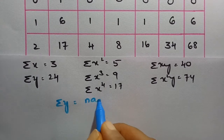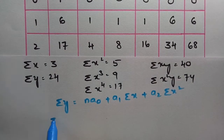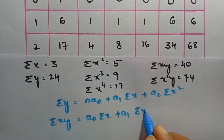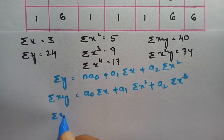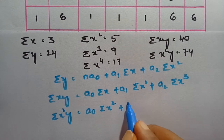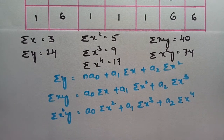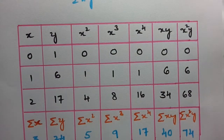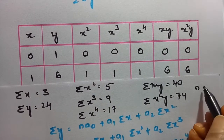Substituting into the normal equations: Σy = n·a₀ + a₁·Σx + a₂·Σx²; Σxy = a₀·Σx + a₁·Σx² + a₂·Σx³; Σx²y = a₀·Σx² + a₁·Σx³ + a₂·Σx⁴. Here n is the number of data points, which is 3.